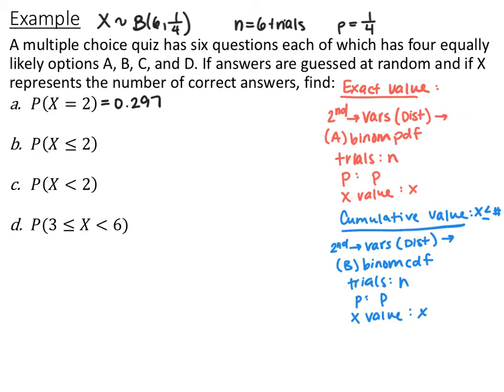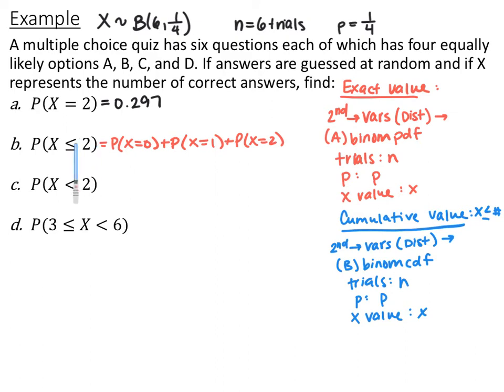For the next part, find the probability that X is less than or equal to 2 — meaning you get at most two right: 0, 1, or 2. There are two ways to do this: add up the three individual probabilities P(X=0), P(X=1), and P(X=2), or use the binomial CDF on your calculator. Instead of going to A (PDF), you go to B, which is CDF — cumulative — because it covers more than one value. It only works when X is less than or equal to a specific number.